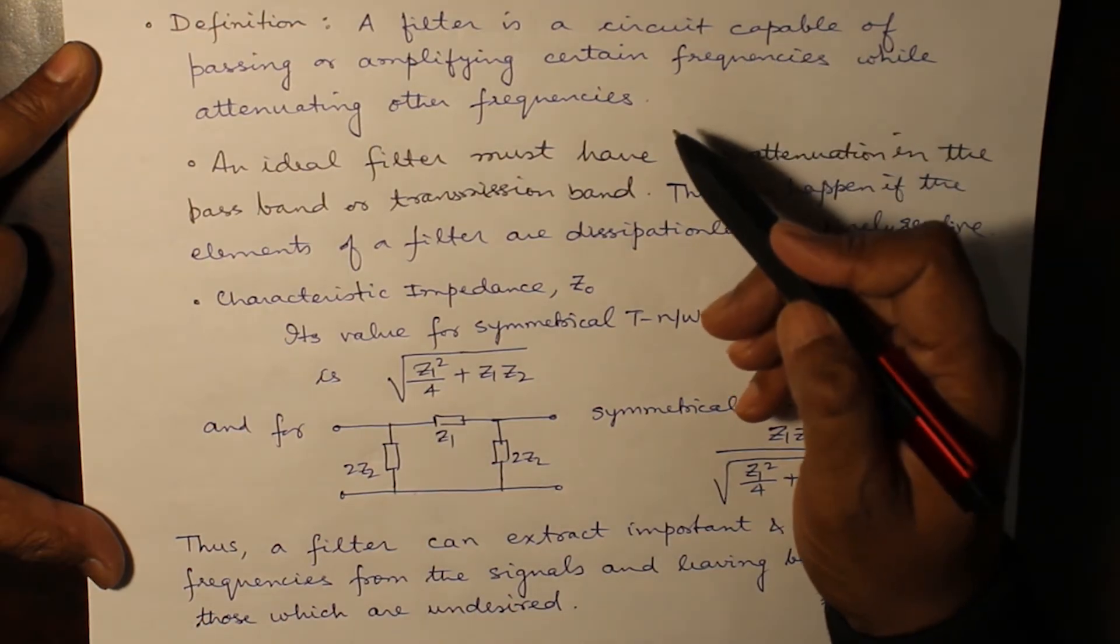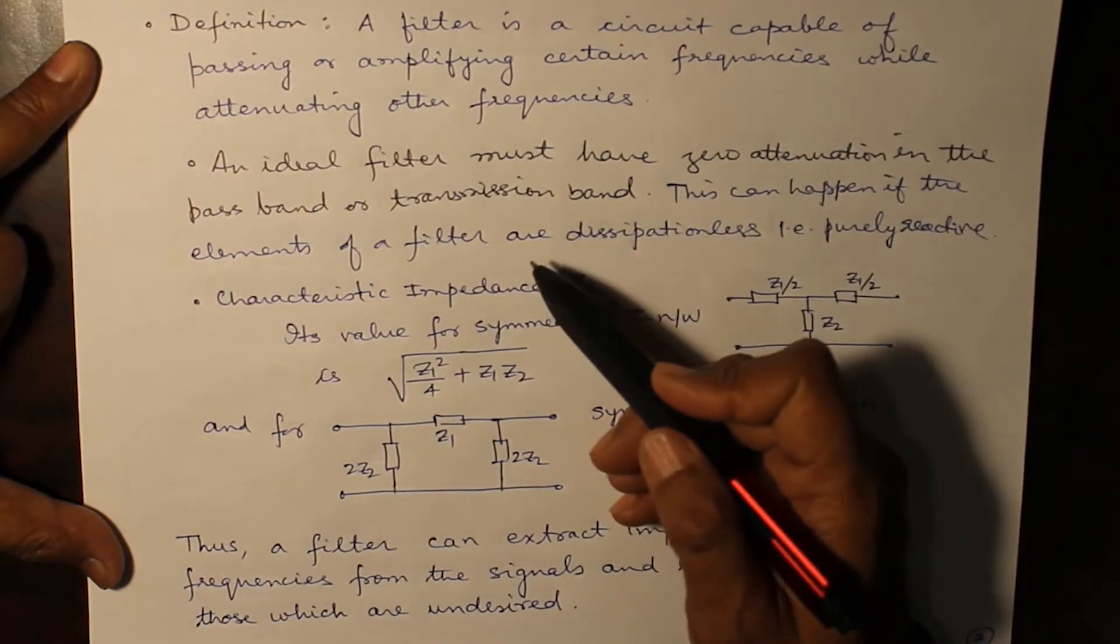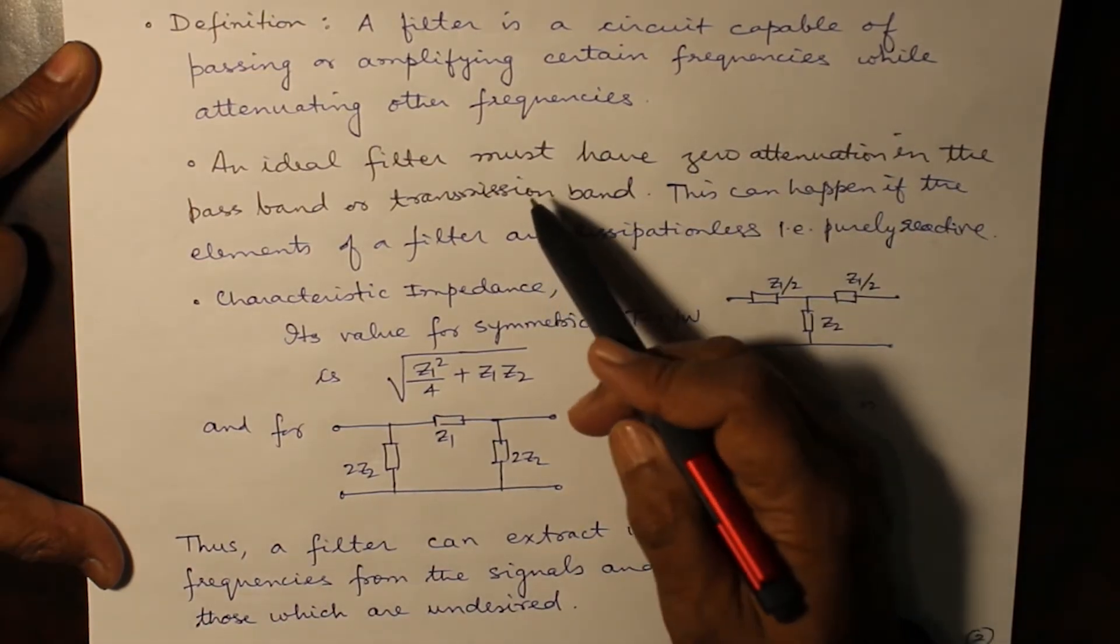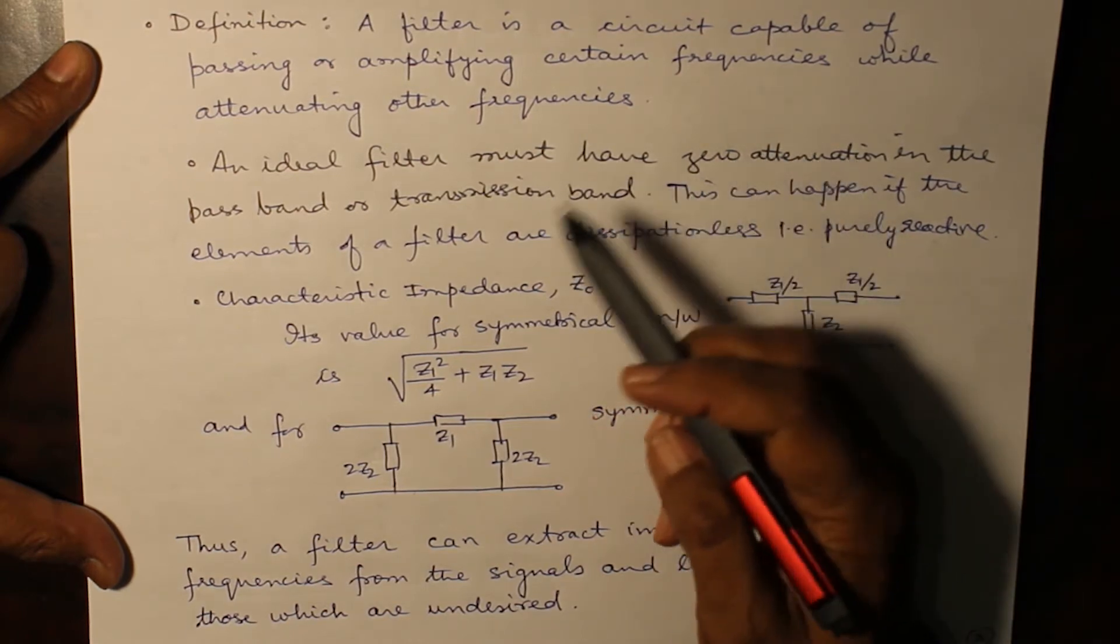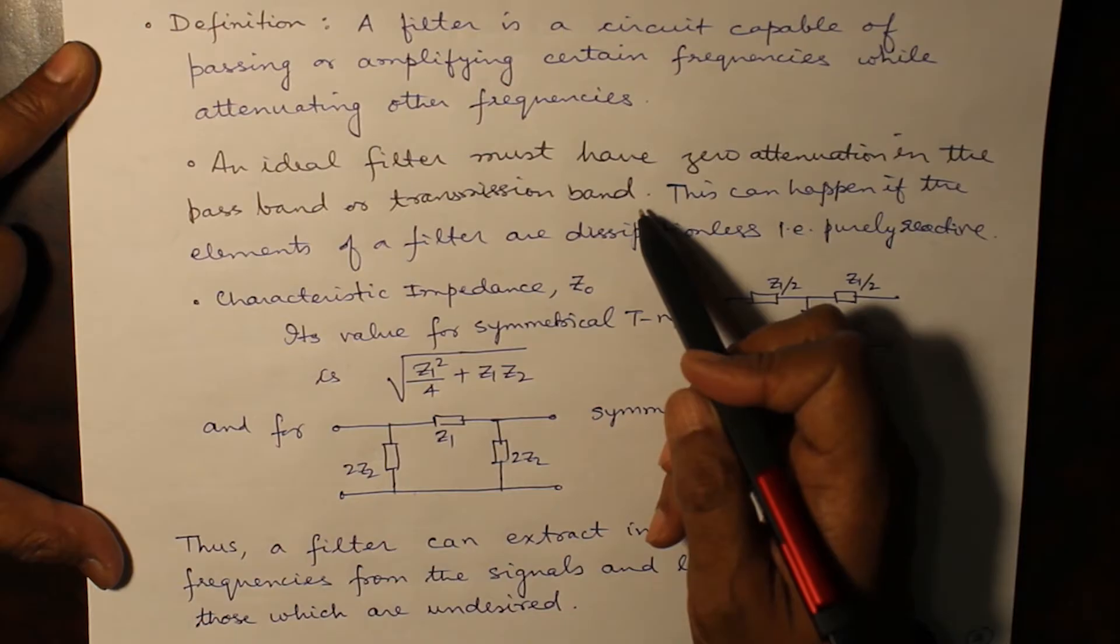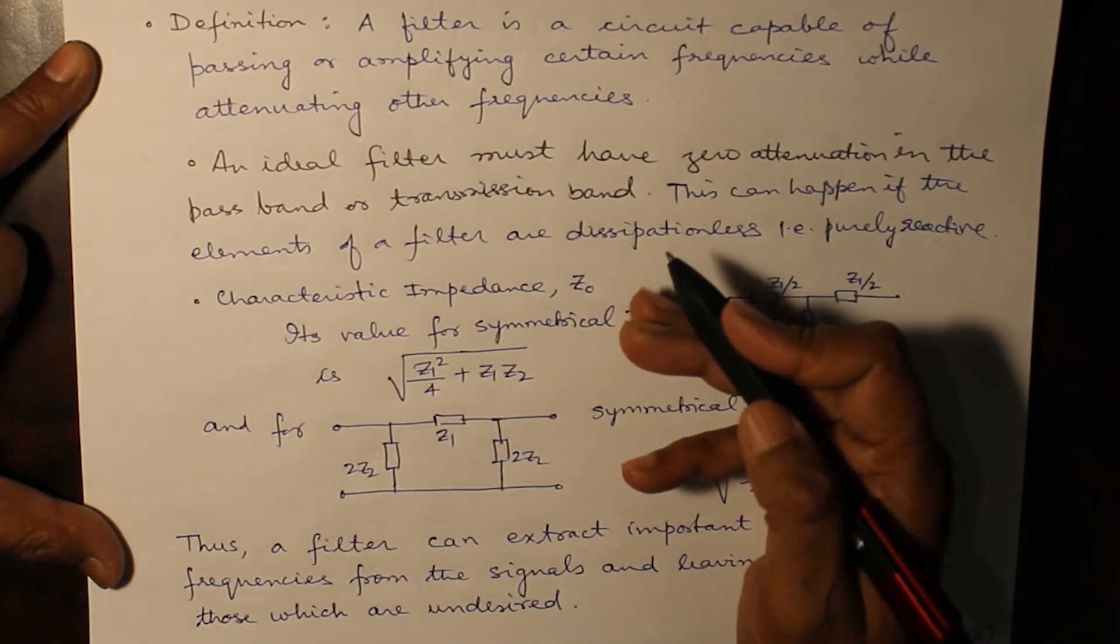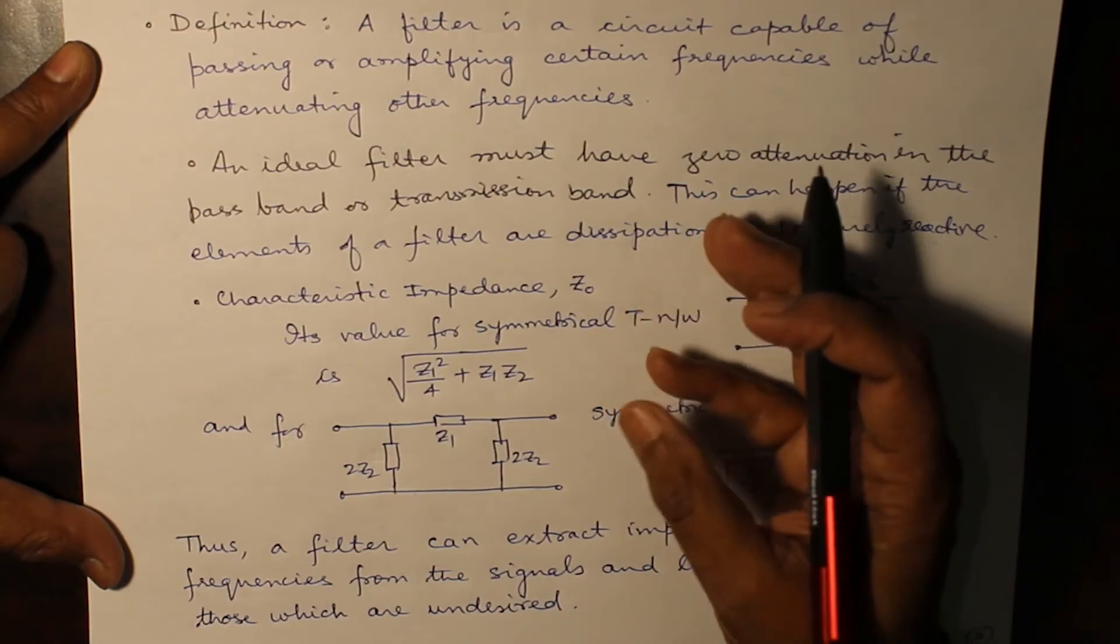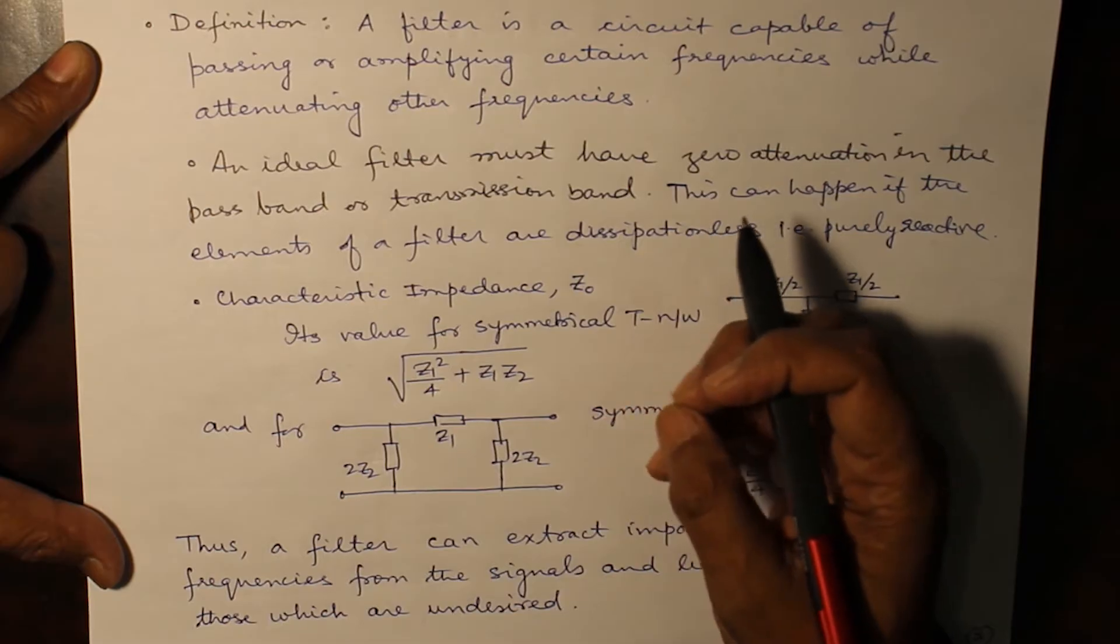Now what will be an ideal filter? An ideal filter must be such that it should have zero attenuation in the pass band or transmission band. Whatever it wants to pass, there should be no attenuation in between for that signal.